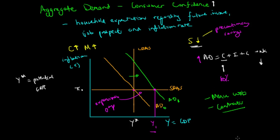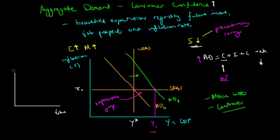In terms of the business cycle — which plots time against GDP in a cyclical fashion — this point is expansionary. Y1 is somewhere above the trend line, exceeding the average rate of GDP growth the economy should exhibit to be sustainable.